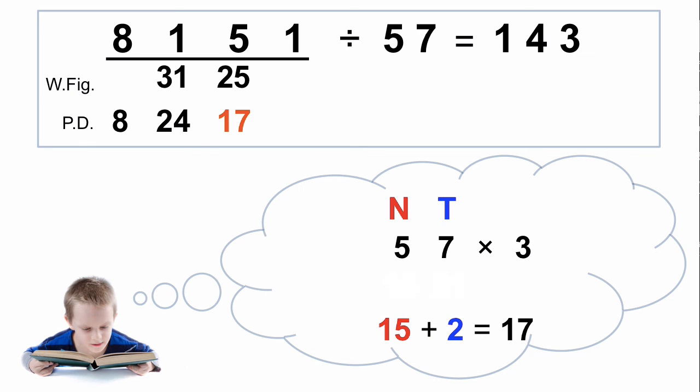Now we have to subtract this 17, the NT product, from our partial dividend. So 17 minus 17 is 0. So 0 goes up as the first part of our next working figure. We bring down the 1. Now we have to calculate our U value. So 3 times 7 is 21, the units figure is 1. So we now have to subtract this 1 from our working figure. So 1 minus 1 is 0. So our final partial dividend is 0.